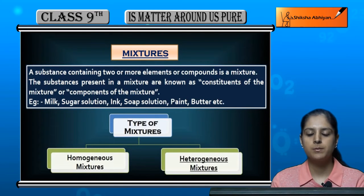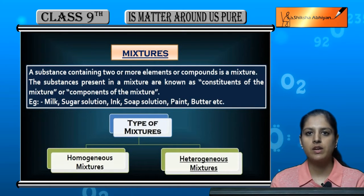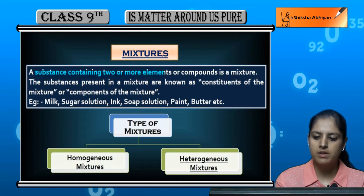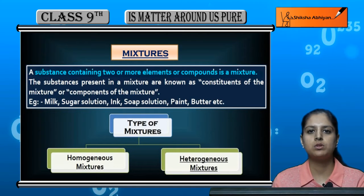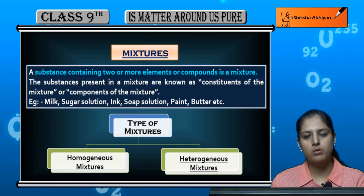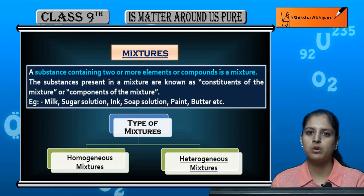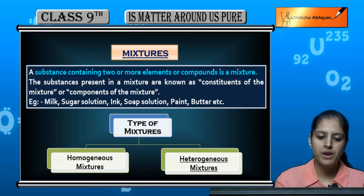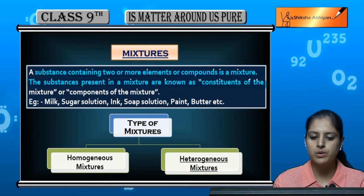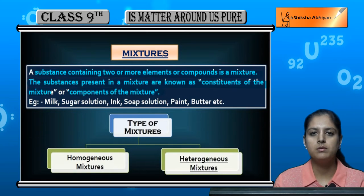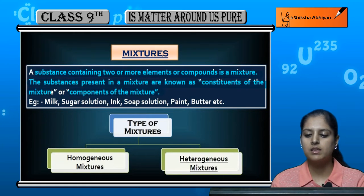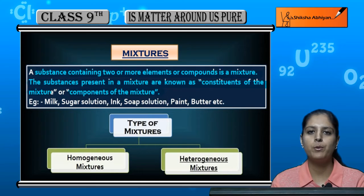The next topic is mixtures. We have already seen the basic introduction, so let us have a quick recap. A substance containing two or more elements or compounds is a mixture. The substances present in a mixture are known as constituents of the mixture or components of the mixture.